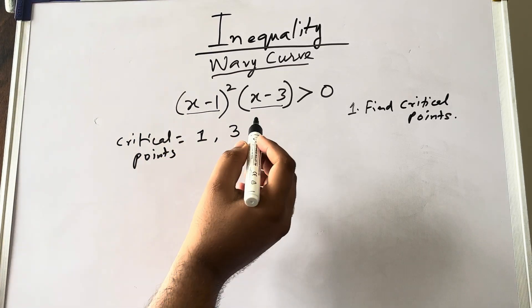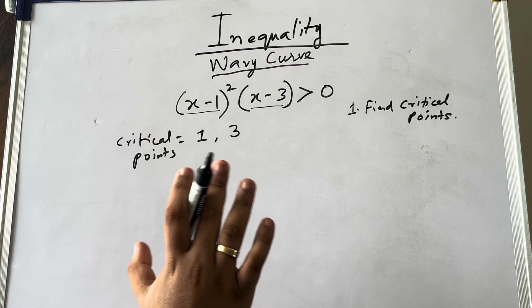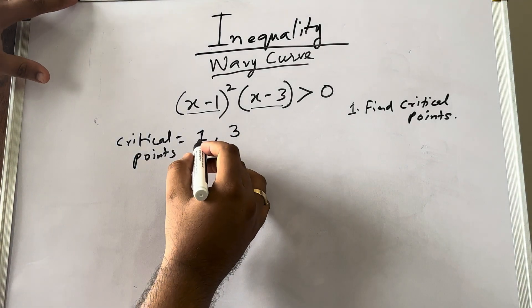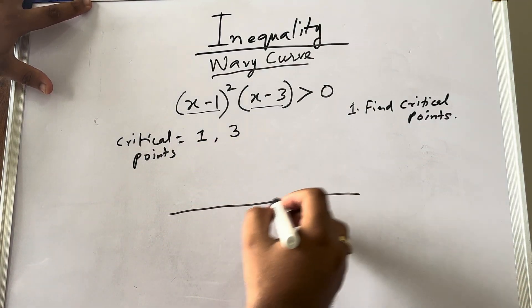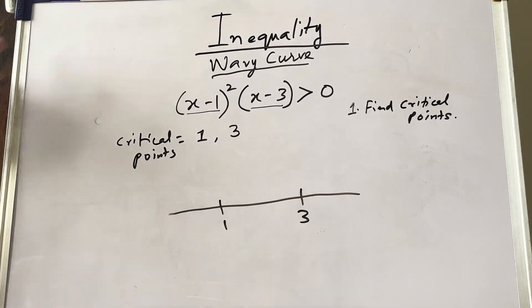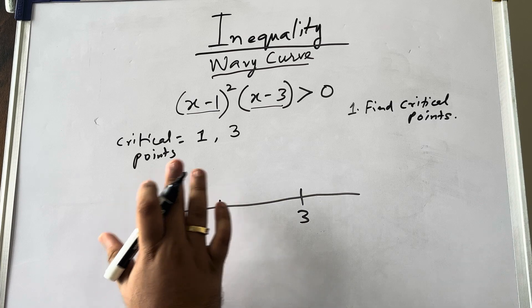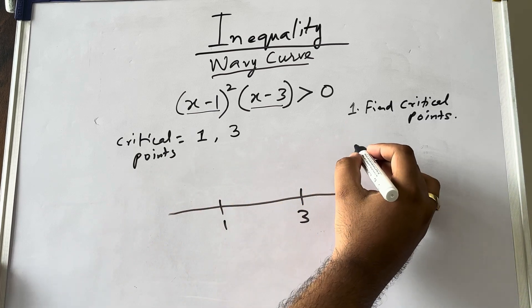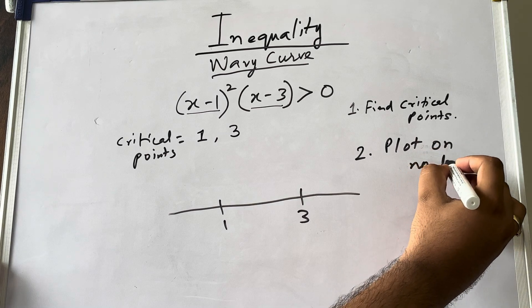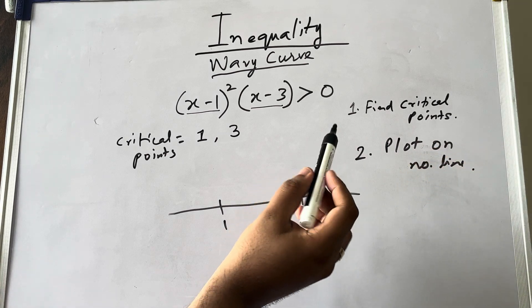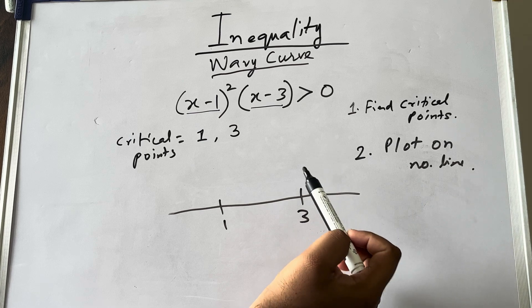So 1 and 3 become the critical points for this equation, and these form the basic foundation for solving the question. What you have to do is draw the number line and plot these two points. So I am drawing the number line: 1 will be here and 3 will be here. First step is finding the critical points; second step is plotting them on the number line.